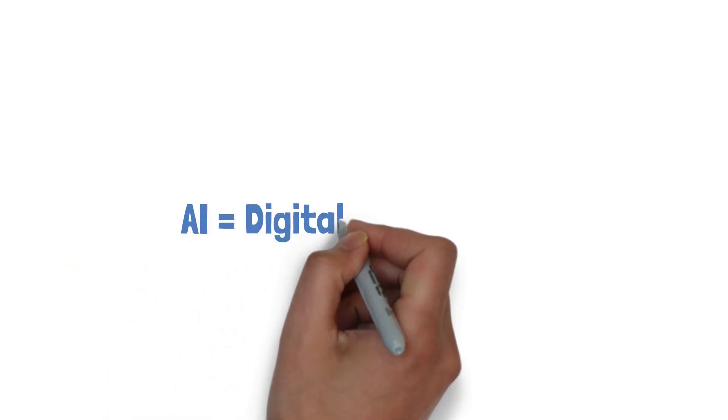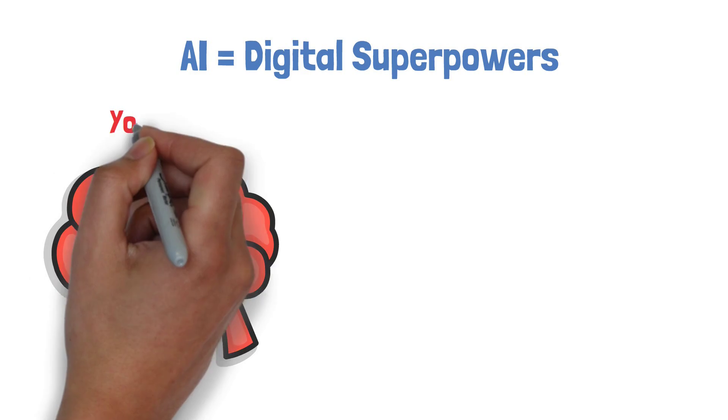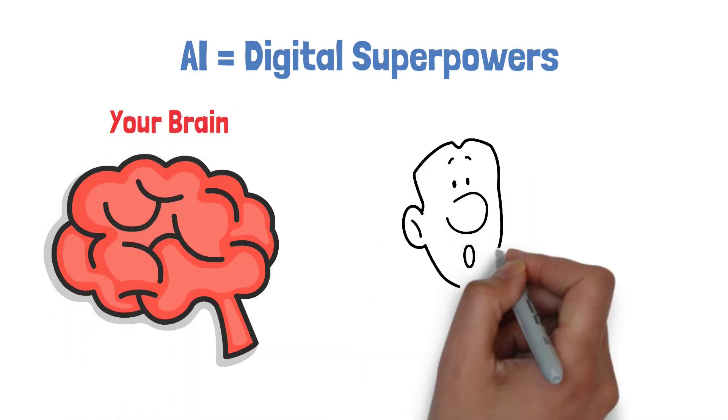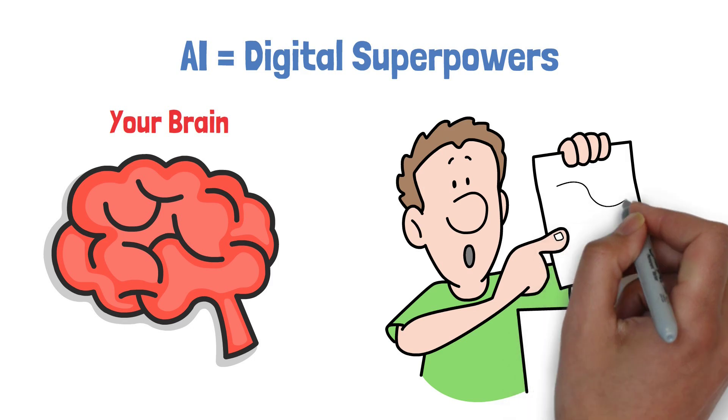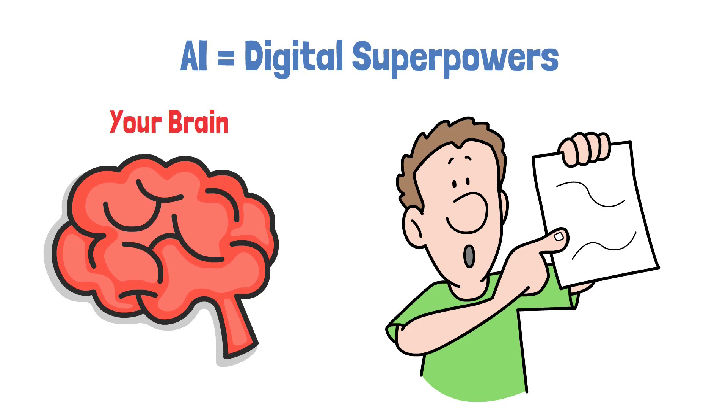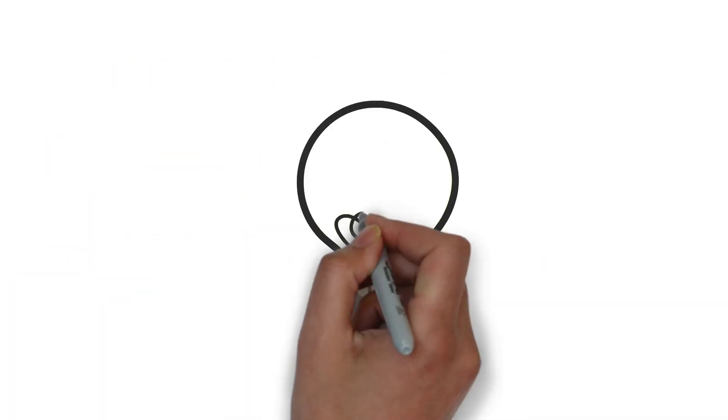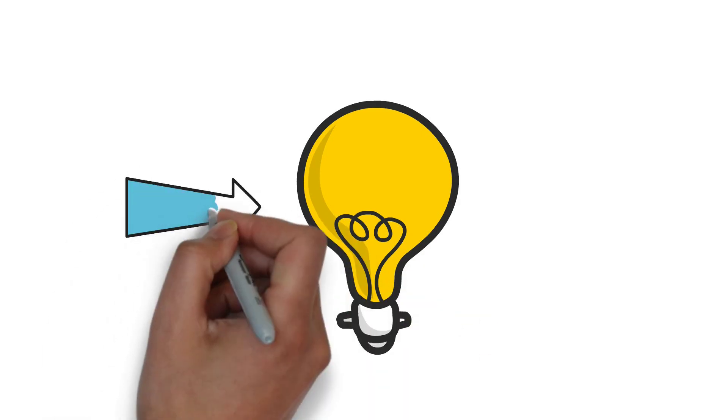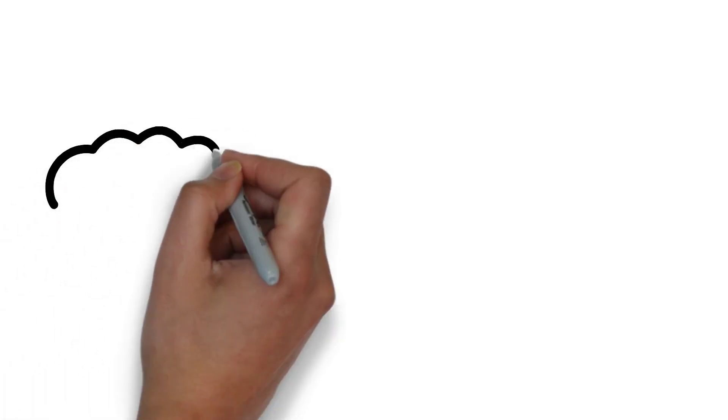AI is digital superpowers. Let's start with your brain. Right now, you're doing something incredible. You're looking at these squiggly lines I'm drawing, and somehow your brain is turning them into meaning. You're recognizing patterns, making connections, learning. Now, imagine we could teach a computer to do the same thing, but faster, with more data, and without getting tired. That's exactly what AI is.